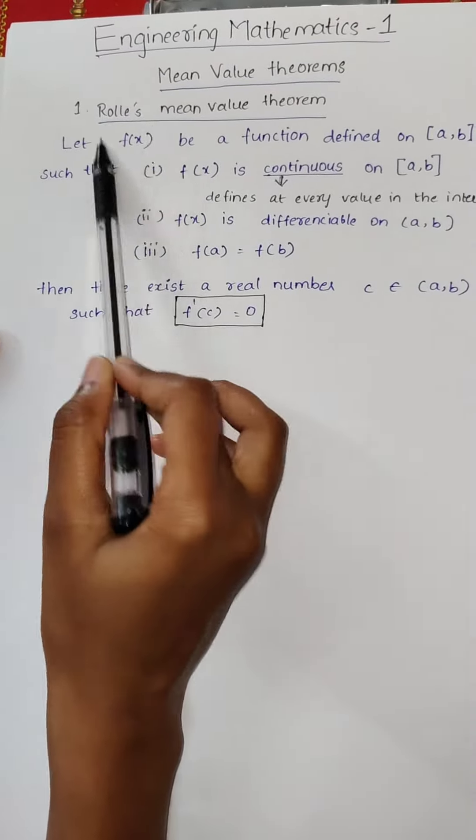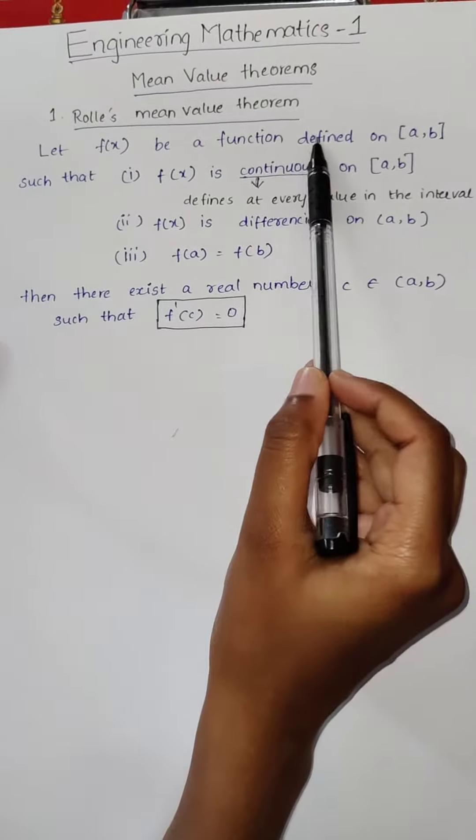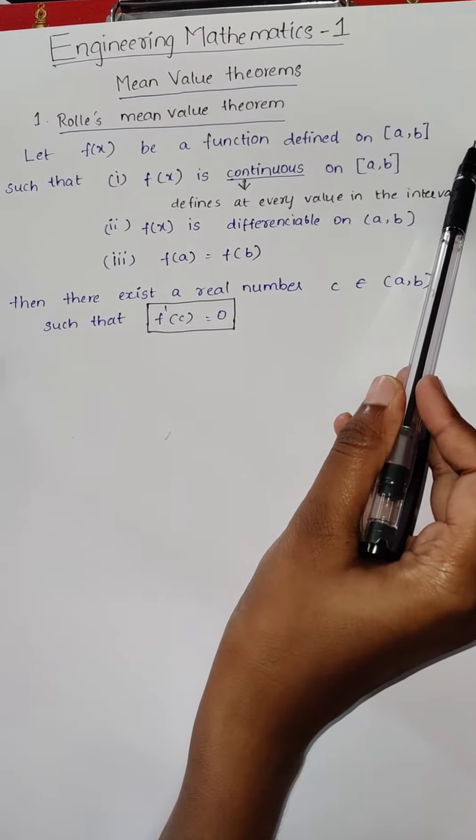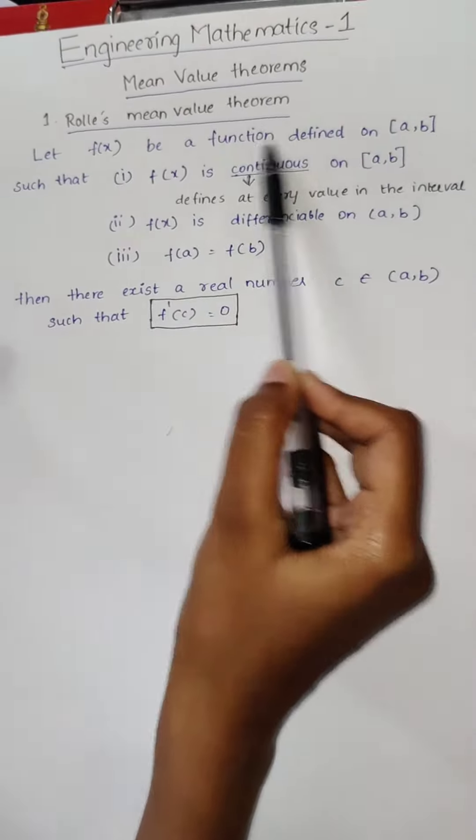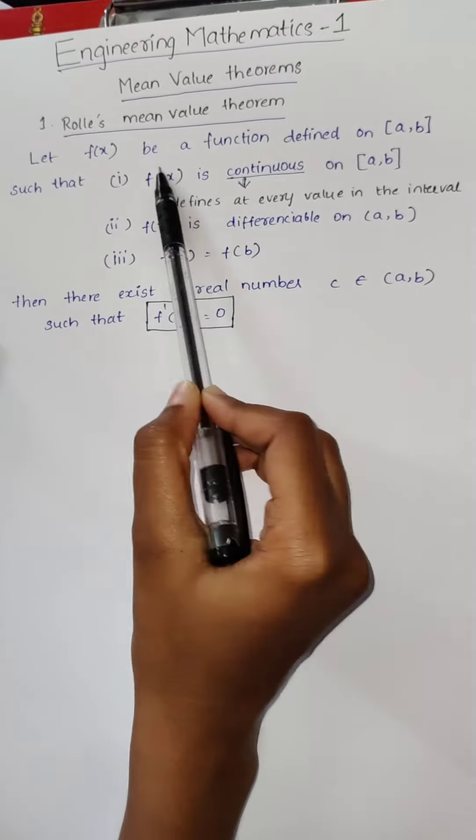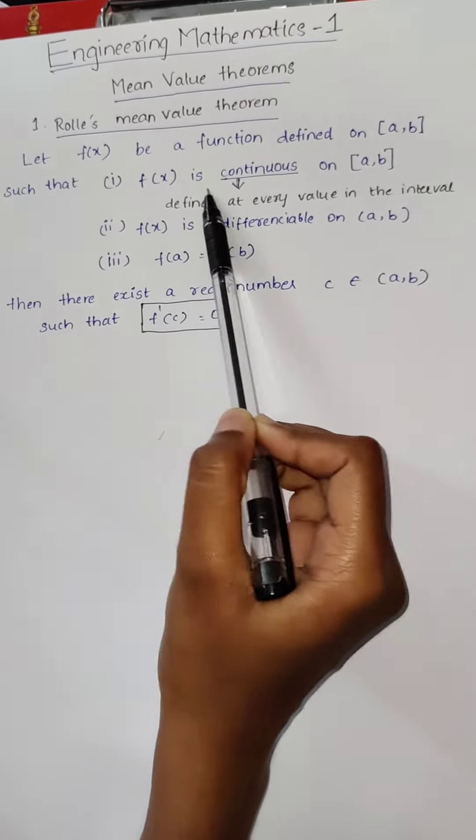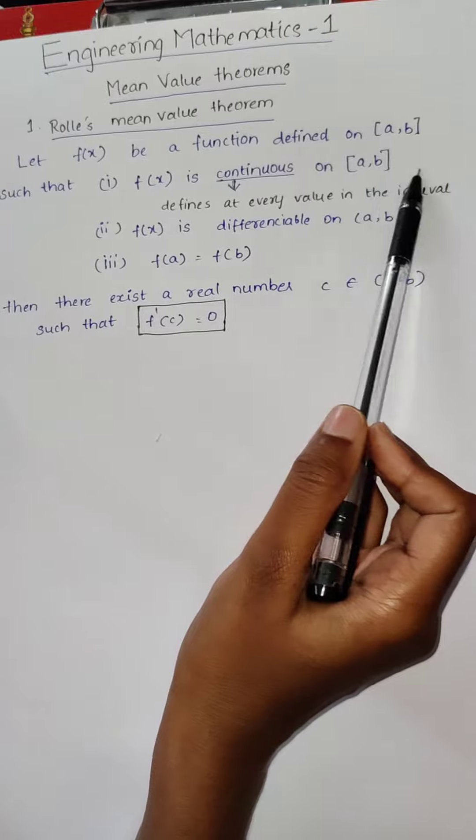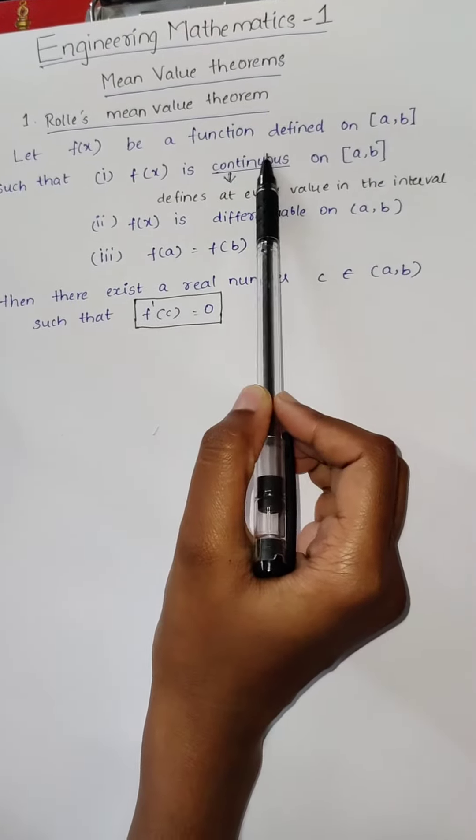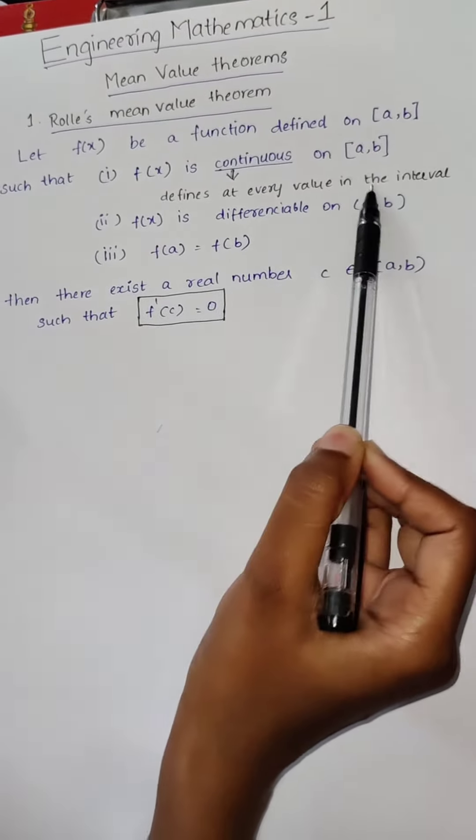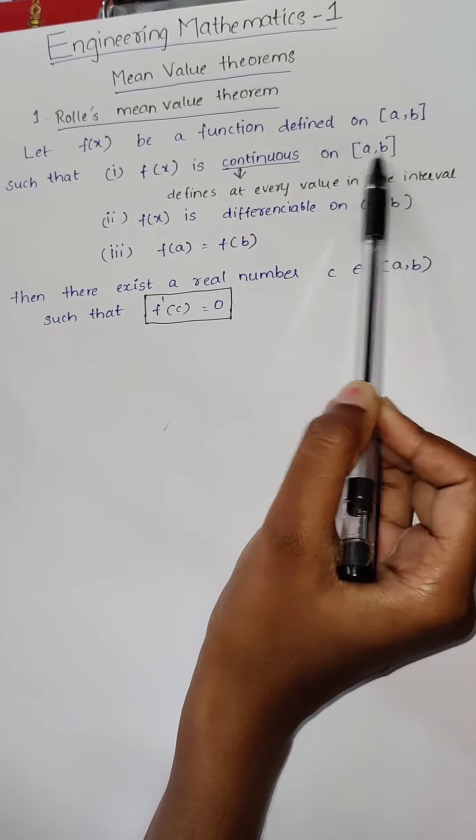Let us consider a function f of x. It should be defined on closed interval a comma b. And also, if it is defined, we have to check the first condition. The first condition is f of x is continuous on closed interval a comma b. What is mean by continuous? It should be defined at every value in this interval a comma b.